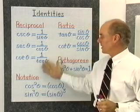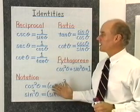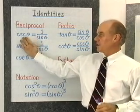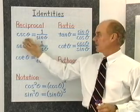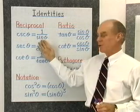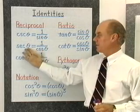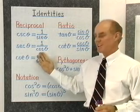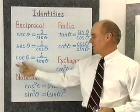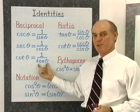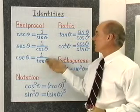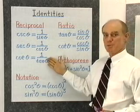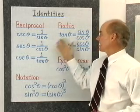Over here on the board, I've written the basic identities — the reciprocal identities: cosecant theta is always 1 over sine theta, secant theta is 1 over cosine theta, and cotangent theta is 1 over tangent theta. Those are the three reciprocal identities.